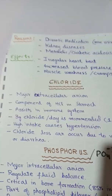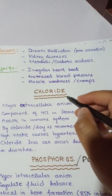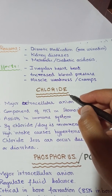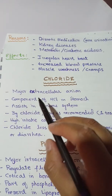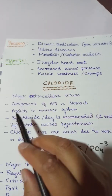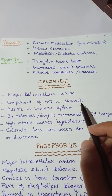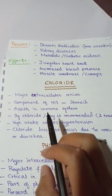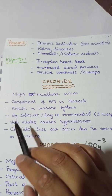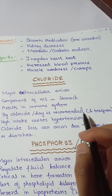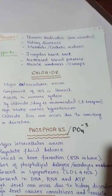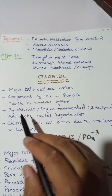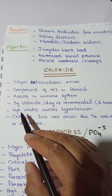The next electrolyte is chloride ion, which is the major extracellular anion — present outside the cell. It is a component of hydrochloric acid inside our stomach and it assists the immune system. Three grams of chloride per day is the recommended daily allowance (RDA), approved by the FDA (Food and Drug Administration, USA), which is almost one teaspoon.